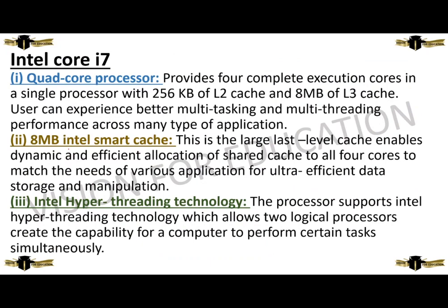Now we are going to discuss about Intel Core i7. It is of three types: quad-core processor, 8 MB Intel Smart Cache, and Intel Hyper-Threading technology. The quad-core processor provides 4 complete execution cores in a single processor with 256 KB of L2 cache and 8 MB of L3 cache. Users can experience better multitasking and multithreading performance across many types of applications.